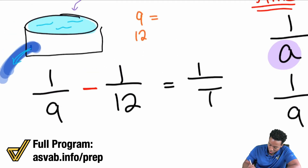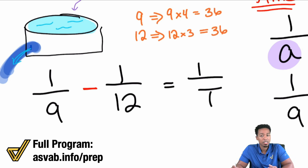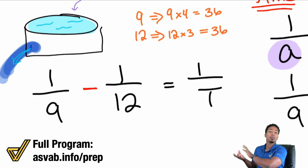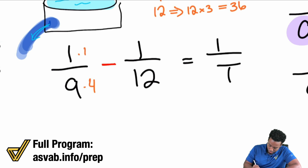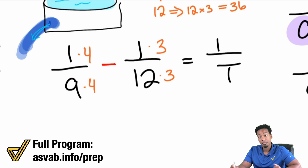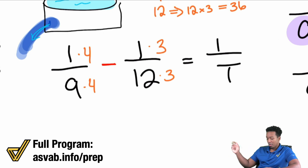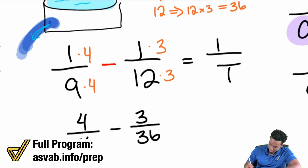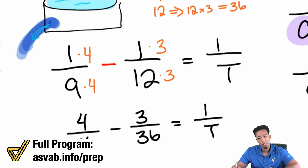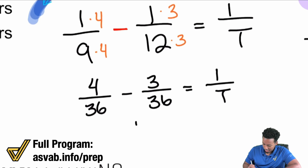9 and 12 both go into 36. 9 times 4 is 36; 12 times 3 is 36. That's the least common denominator. I'm going to use the LCD to give myself the least amount of work. So we get 4/36 minus 3/36 equals 1/T. Combining those fractions — 4 minus 3 is 1 — we get 1/36 = 1/T. Remember, we are subtracting.